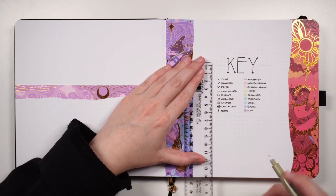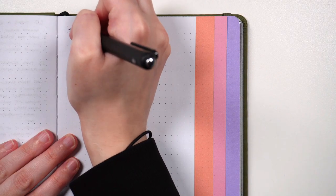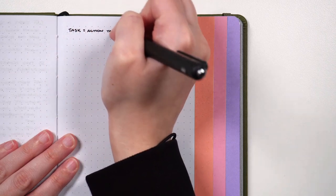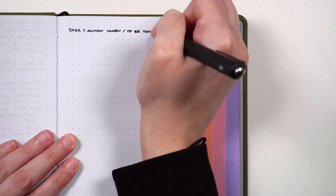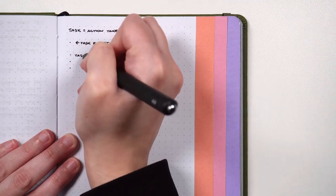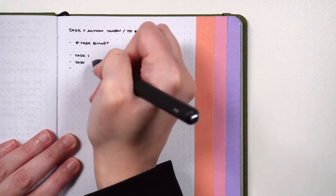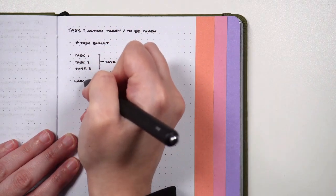An entry to your bullet journal is any piece of information you're recording, with the common types being tasks, events, and notes. A task is an entry representing an action to be taken or that has been taken, represented in the original system using a dot bullet. Subtasks are smaller tasks related to a larger task or project, typically written as an indented list underneath the task they relate to.